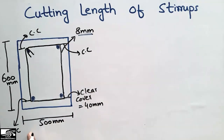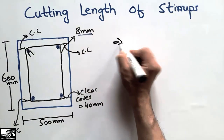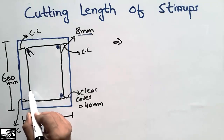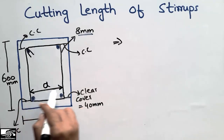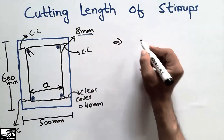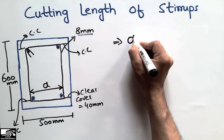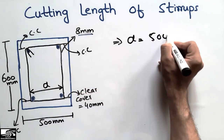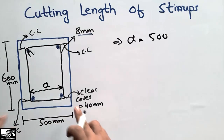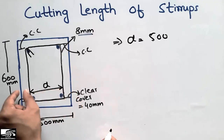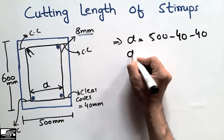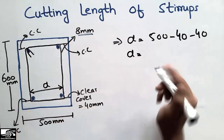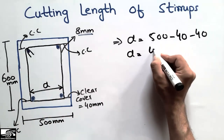First, we find the width of the stirrup, represented by A. A is equal to the beam width of 500 mm minus two clear covers: 500 − 40 − 40, which gives us A = 420 mm.